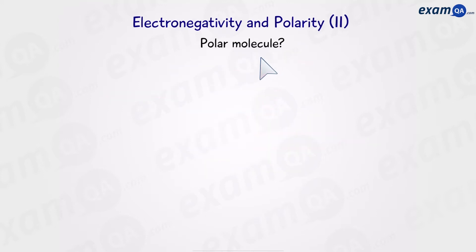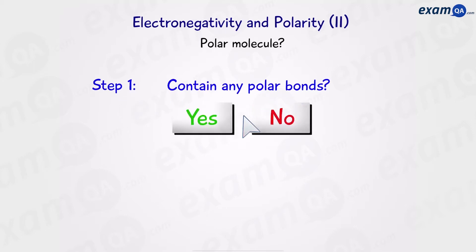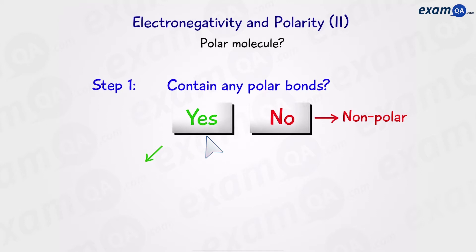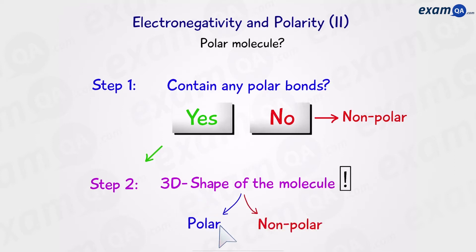So how do we know if a molecule is polar? There are two steps. Step one: does the molecule have any polar bonds? If the answer is no, that means it's not going to be a polar molecule. However, if the answer is yes, we have to look at step two. Step two is we need to draw out the three-dimensional shape of the molecule. I recommend watching the video on shapes of molecules before continuing. If you're confident with drawing the shapes of molecules, from here on we can determine if the molecule will be polar or non-polar.